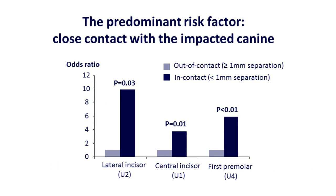Third, all variables reflecting the proximity to the impacted canine were significantly different between the resorption positive and resorption negative subgroups. With the variables combined for the binary logistic regression tests, we found that an in-contact relationship significantly and substantially increased the risk of root resorption in all adjacent teeth.